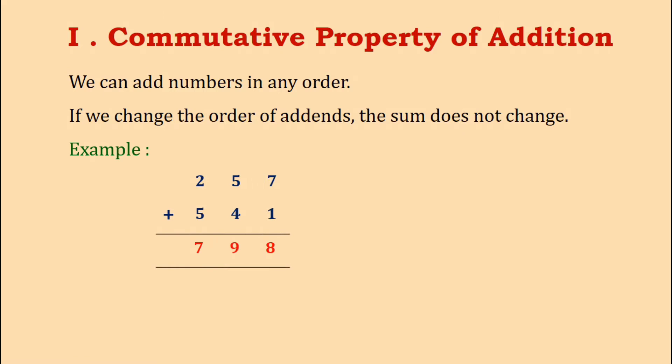Now, let us interchange the order of the addends and add 541 and 257. We again get the sum as 798. Therefore, 257 plus 541 is equal to 541 plus 257.